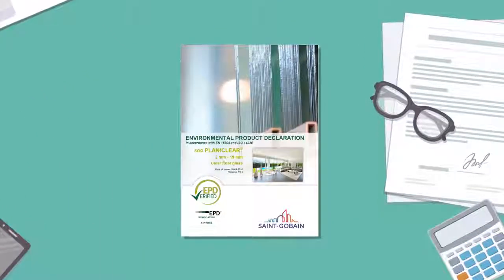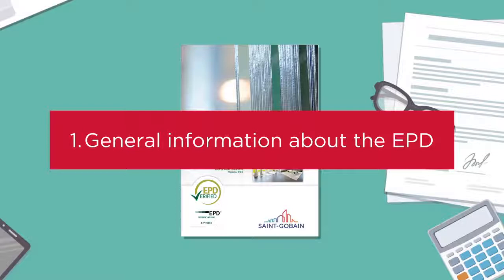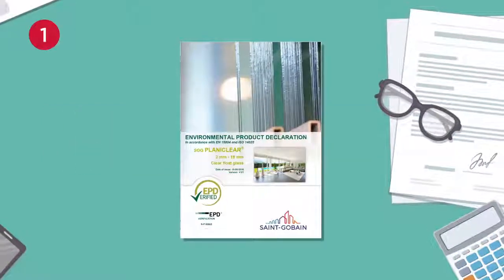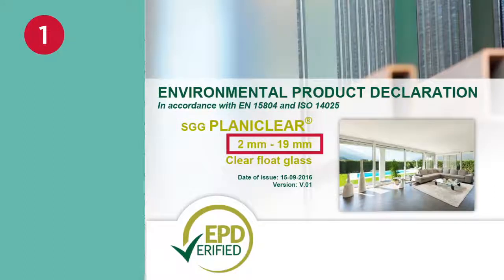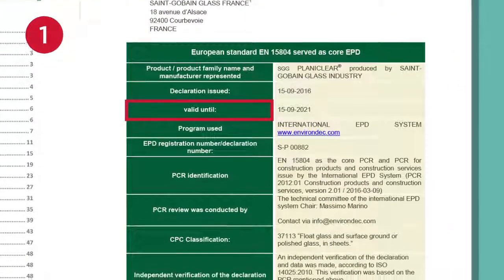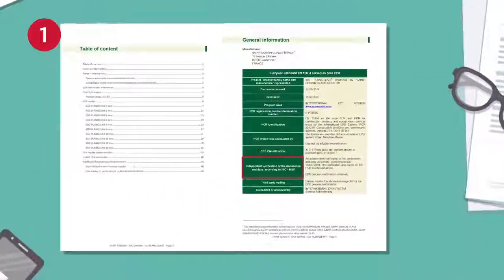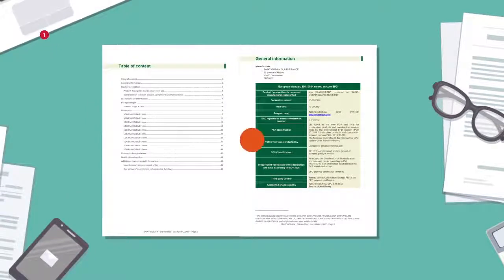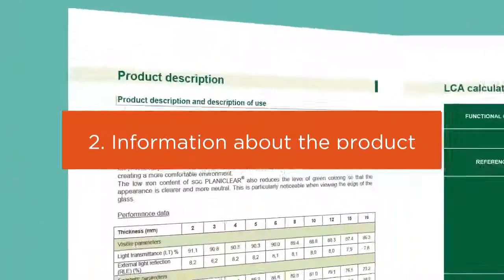four, LCA results; and five, an analysis of the LCA results. Let's use the EPD for Planibel Clear glass as an example. The cover sheet contains information including the name of the product — here it's SGG Planibel Clear — the thickness concerned — here it's two millimeters to 19 millimeters — the document's expiry date (an EPD is valid for five years), and the fact that the EPD has been verified.